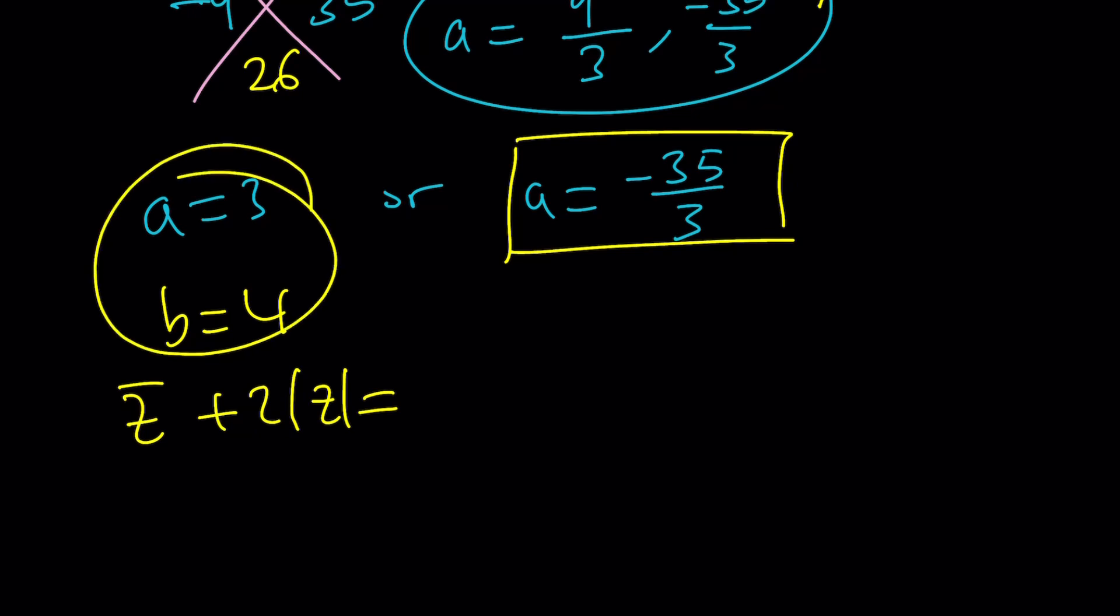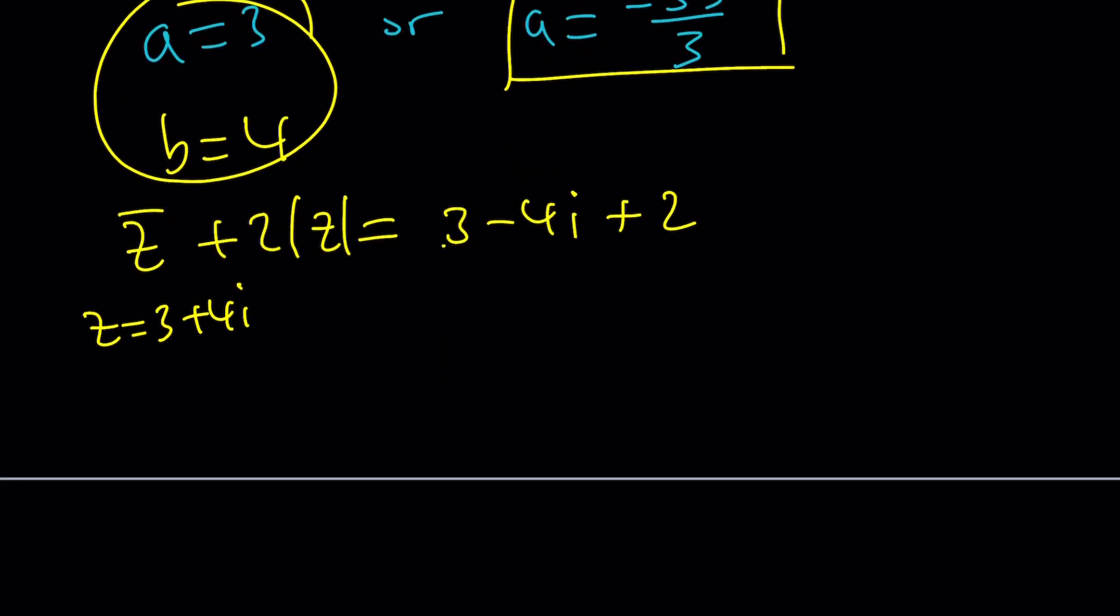This case is fairly easy. If z is equal to 3 plus 4i, then I'm going to get z bar as 3 minus 4i. And the absolute value of z is just going to be 5. 3, 4, 5, you know that right? This is going to be 10 plus 3 which is 13 minus 4i. Yay, it checks. Obviously you were expecting that to check, right?